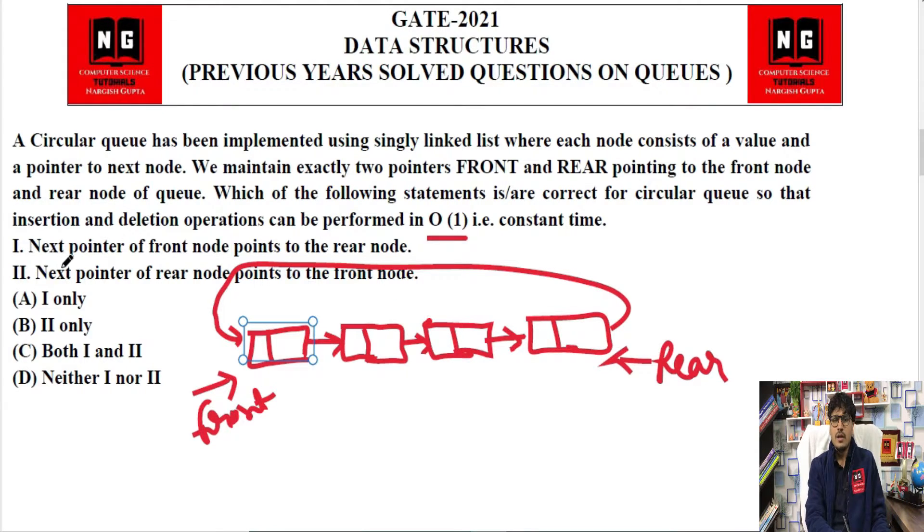Which of the following statements is correct for circular queue so that insertion and deletion operations can be performed in constant time? Next pointer of front node points to the rear node - that means the front node's next pointer, meaning this one, what is it pointing to? It's pointing to the front node. So in this case, we perform insertion at the rear end in constant time, and deletion at the front end in constant time. So statement number two only is correct for this question.